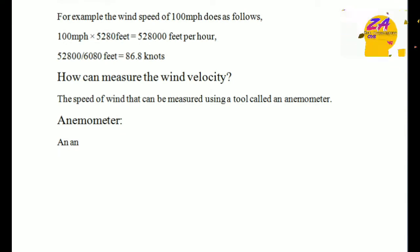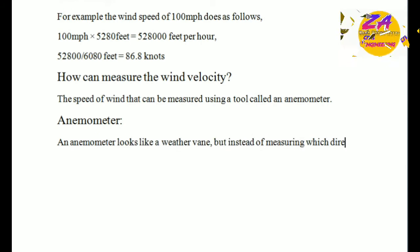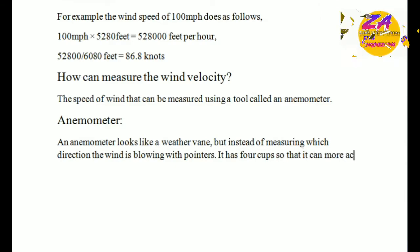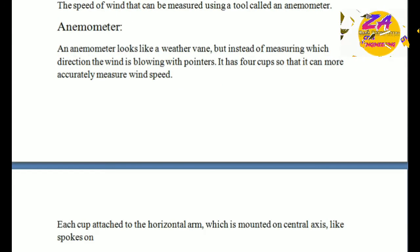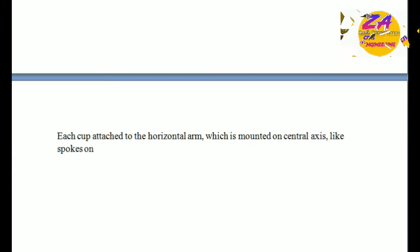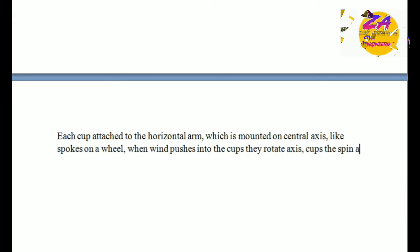An anemometer is equipment used to measure wind velocity. Anemometers look like a weather vane, but instead of showing which direction the wind is blowing with pointers, it has 4 cups so that it can more accurately measure the wind speed. Each cup is attached to a horizontal arm which is mounted on a central axis like spokes on a wheel.